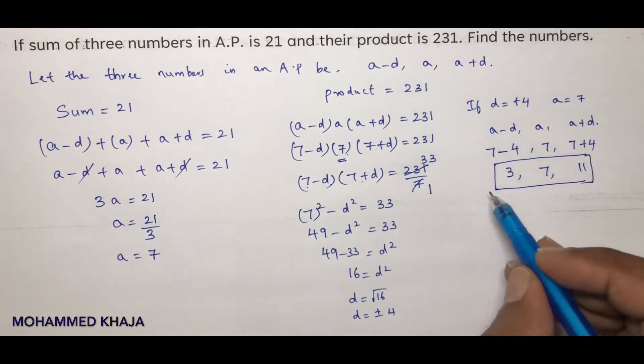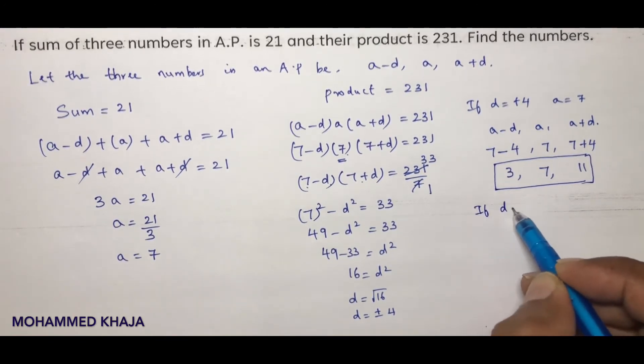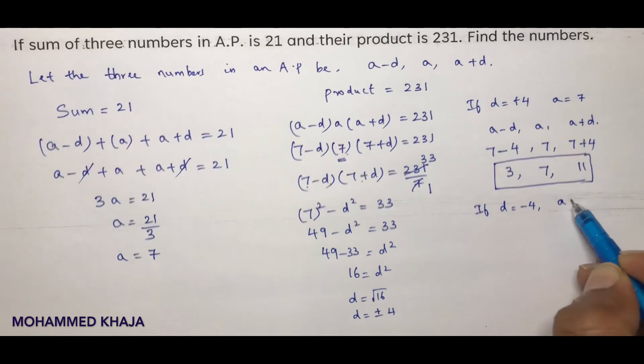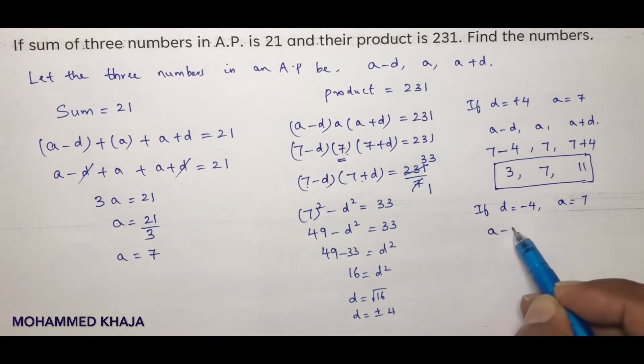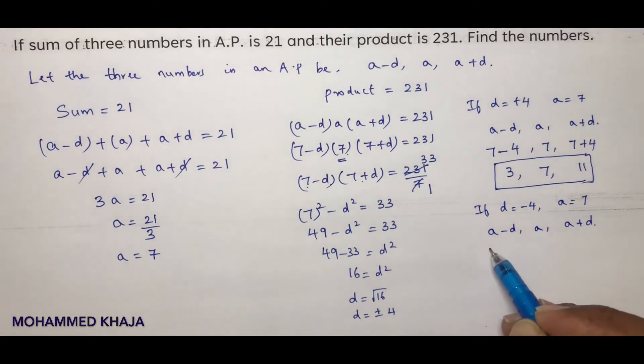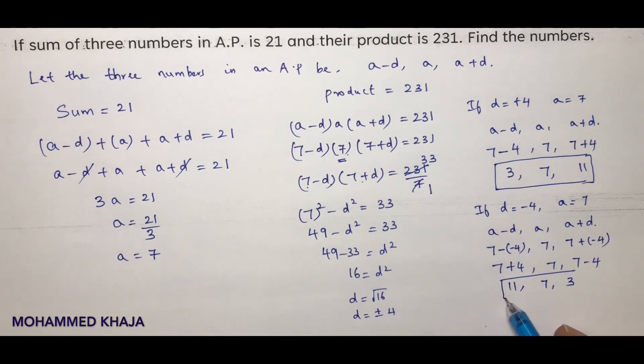But there is a chance that if we take d as minus 4, a is 7. Now again calculate a minus d, a, and a plus d. A is 7, d is minus 4. So this will become 7 plus 4, 7, 7 minus 4. That's 11, 7, 3. Either this will be the three terms or this. Both are the same.